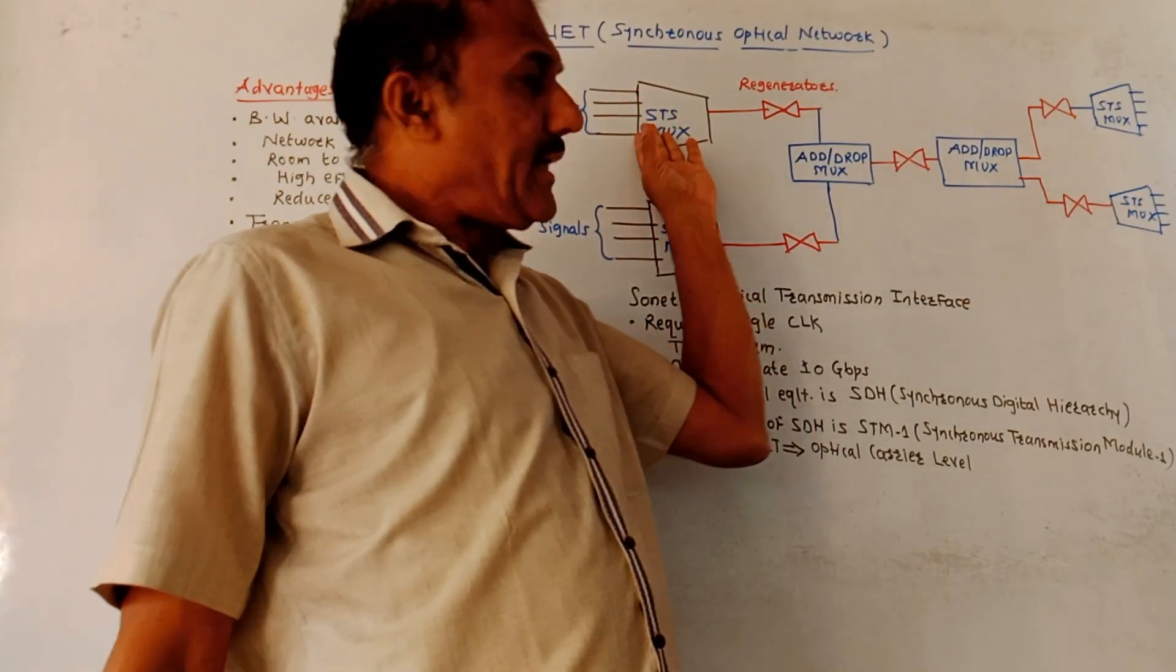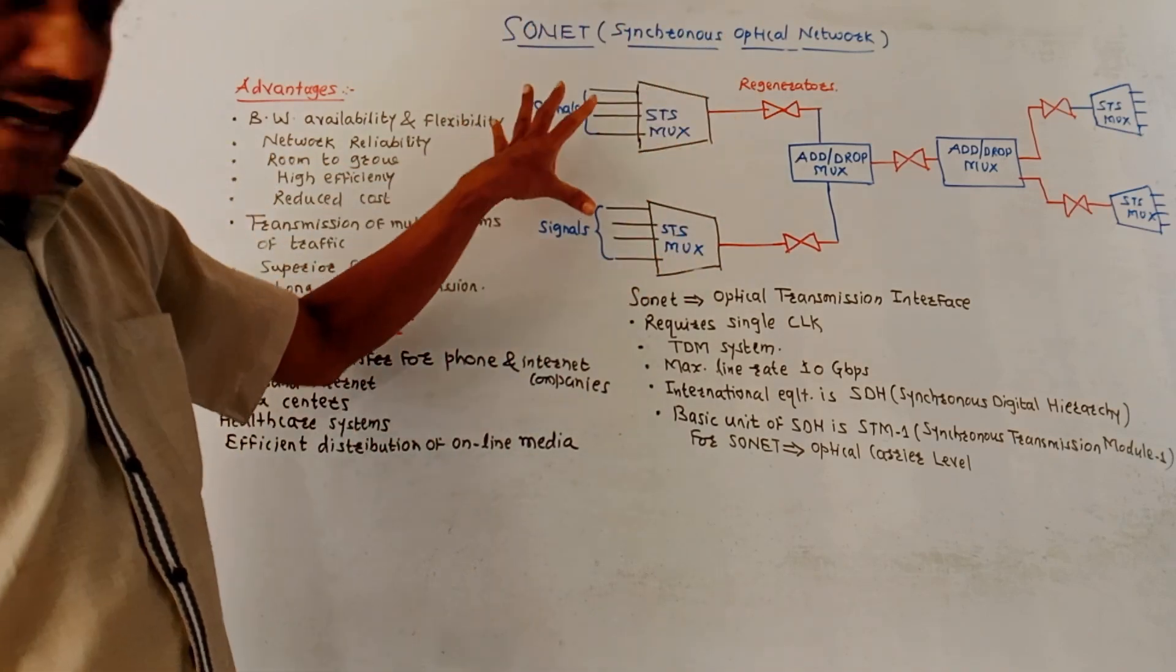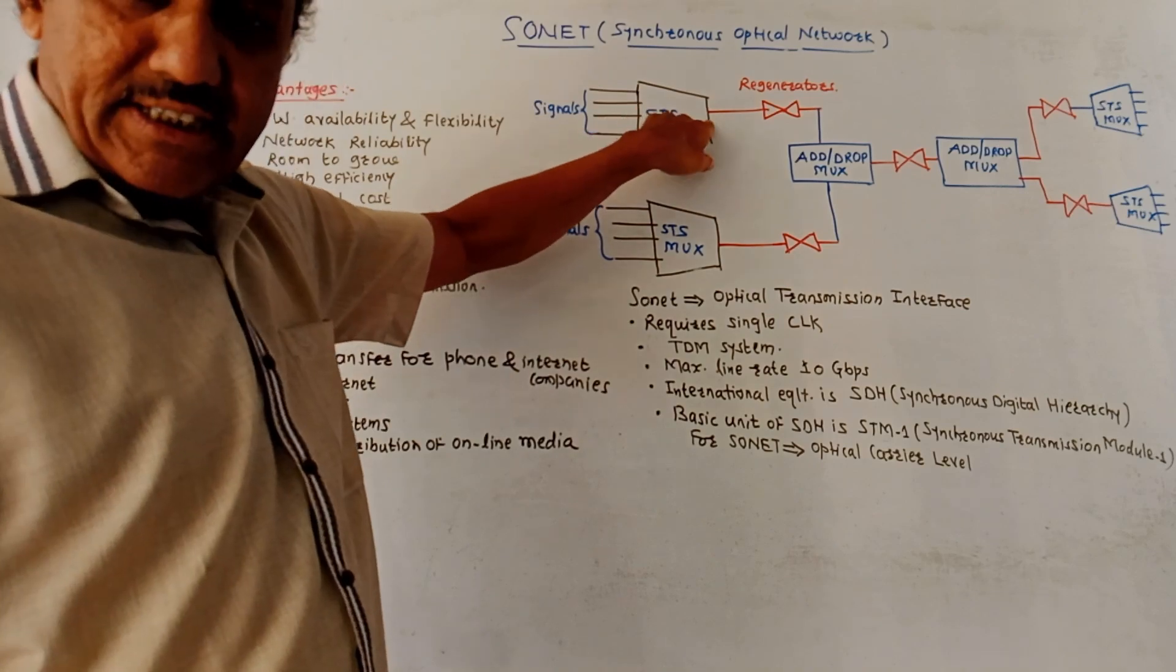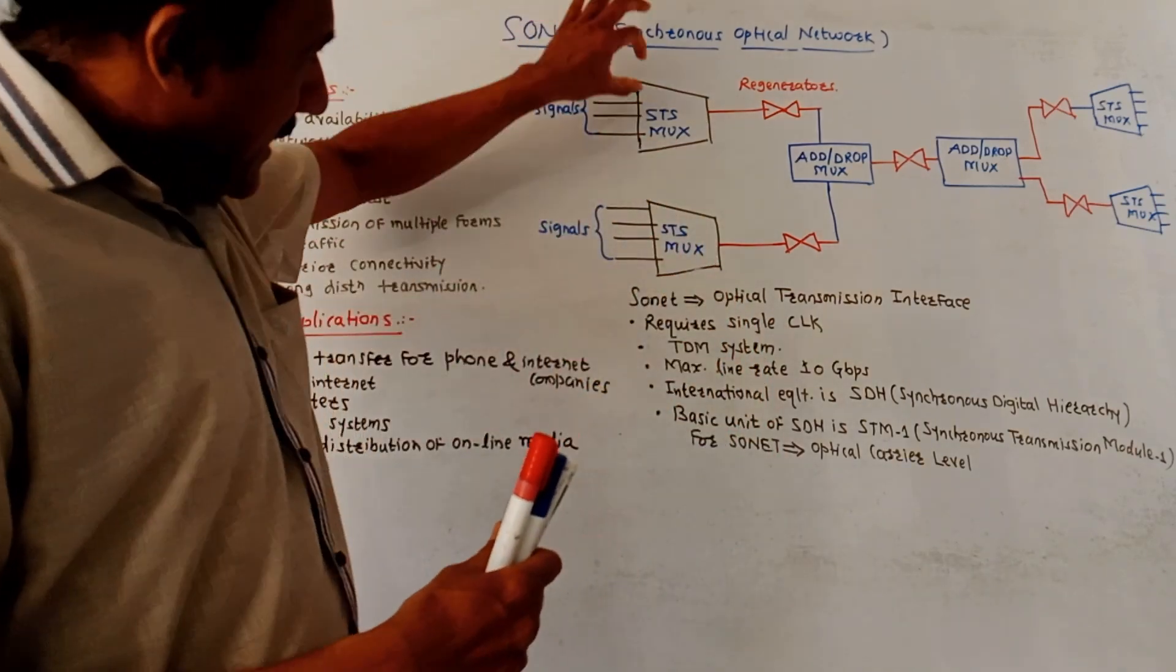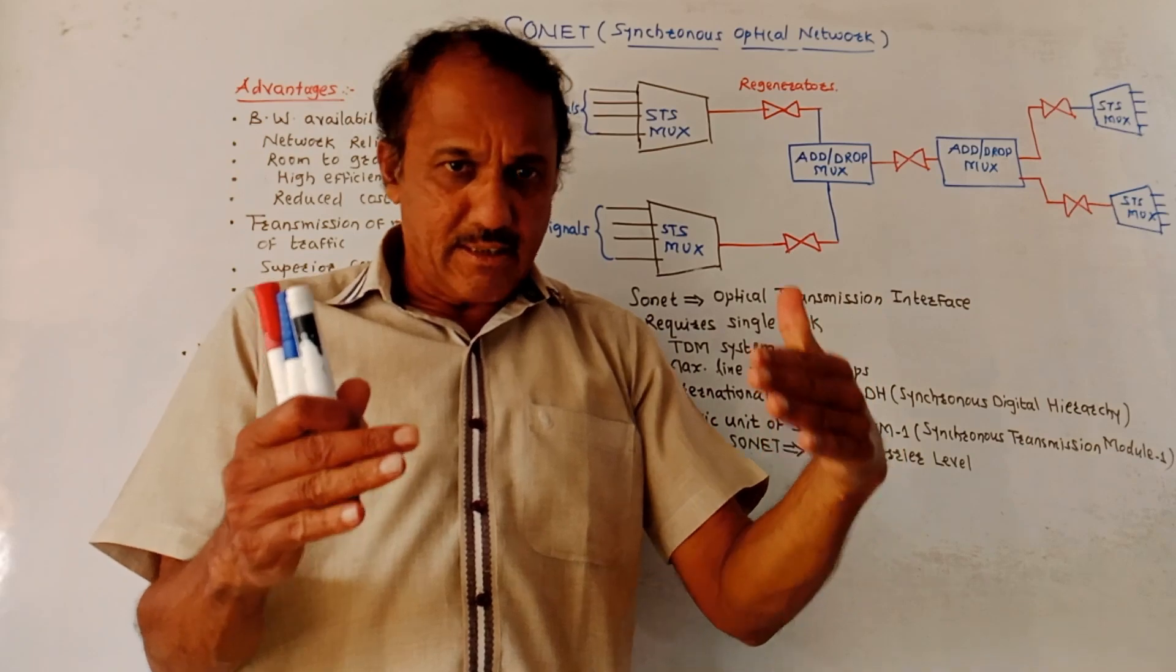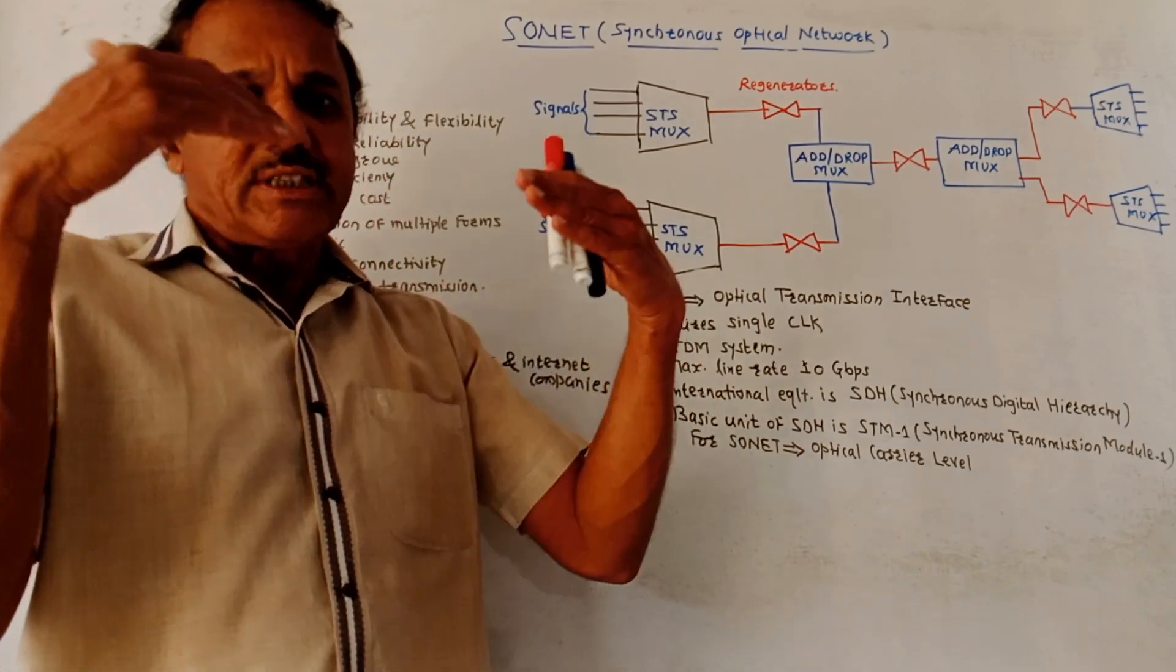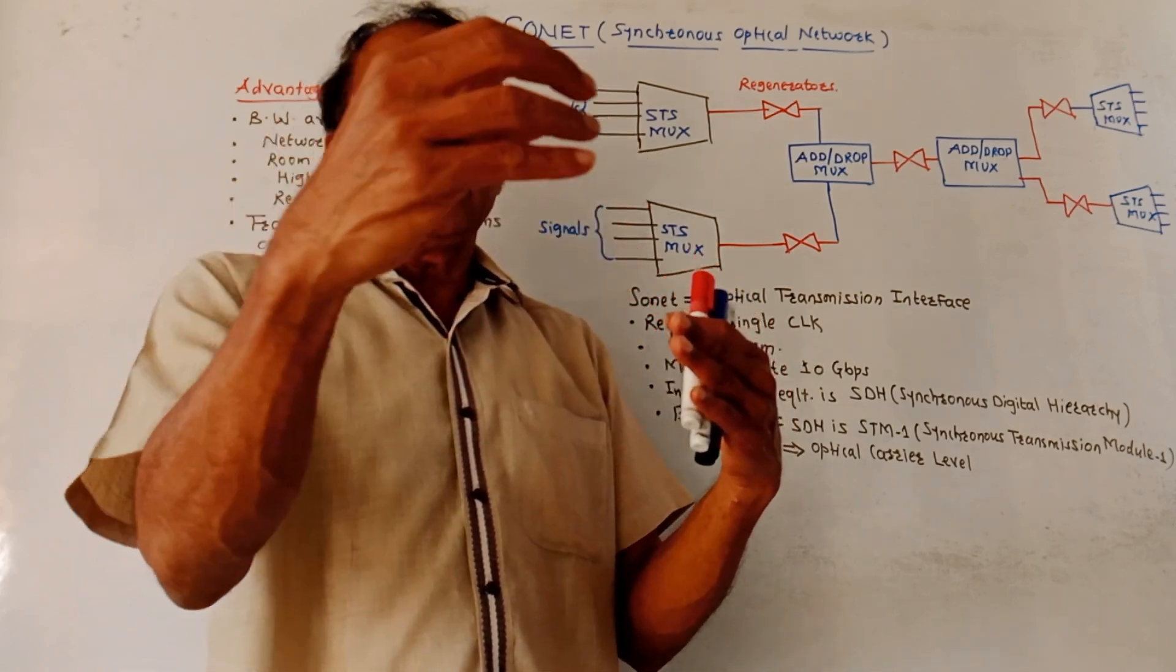Next important part is SONET, that is Synchronous Optical Network. This is the typical diagram that represents the SONET structure. As shown in this diagram, here we are applying certain signals. Then this is STS multiplexer, as well as it is MUX or DEMUX. It is STS, represents synchronous transport signal. If it is acting as a multiplexer, then it accepts many input signals and converts it into STS signal. If it is acting as a DEMUX, that means if you are using it at the receiver end, then in that case it converts STS signal and sends various signals to the particular destination.